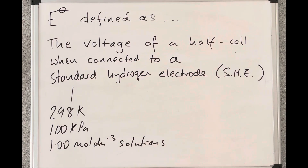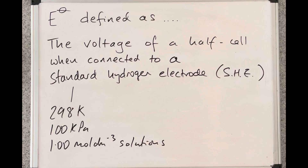The best place to start is to look at the definition for the standard electrode potential. That is the voltage of a half cell when connected to a standard hydrogen electrode, abbreviated to SHE. Standard conditions obviously apply: 298 Kelvin for the temperature, 100 kilopascals for the pressure, and any solutions need to be at 1 mole per decimetre cubed.